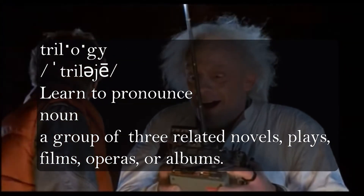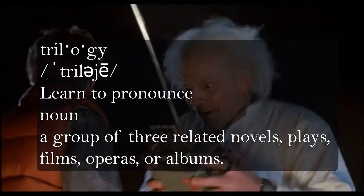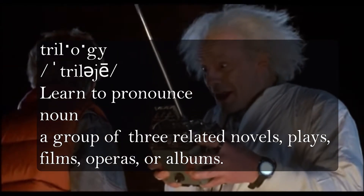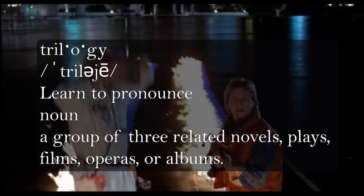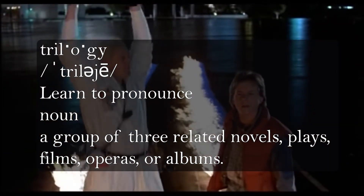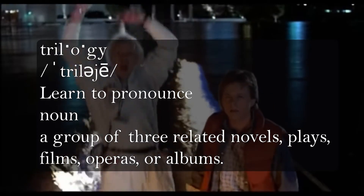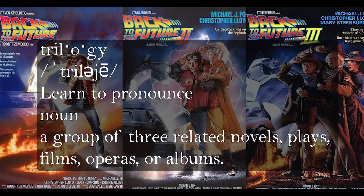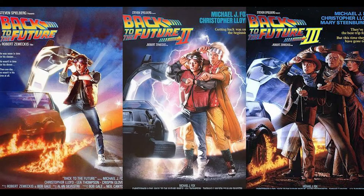The next term is trilogy, which already tells us what it really is. Tri meaning three — three films that are related to each other, usually as prequels and/or sequels to each other, such as The Hobbit, Lord of the Rings, Back to the Future, and The Matrix.